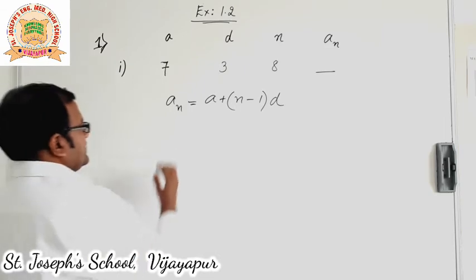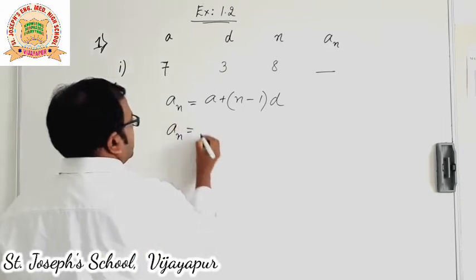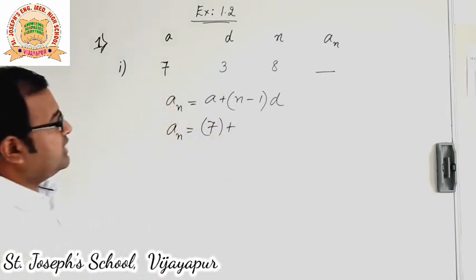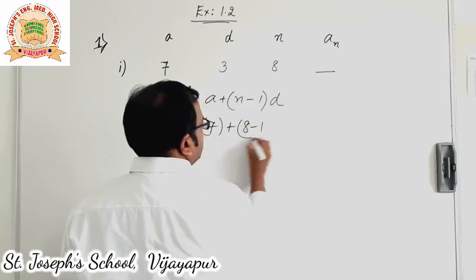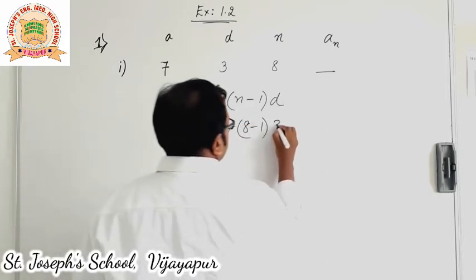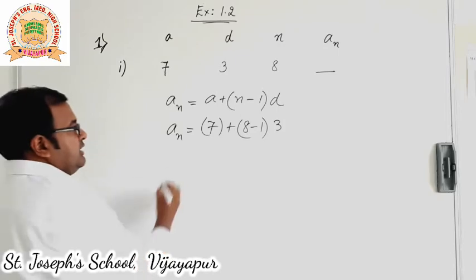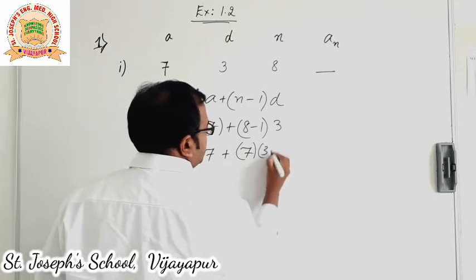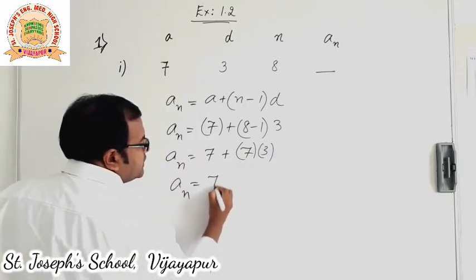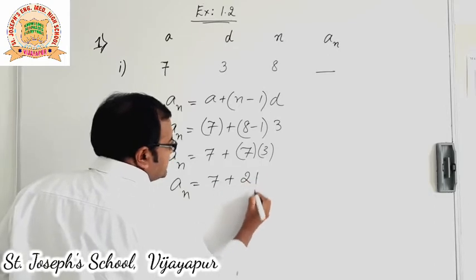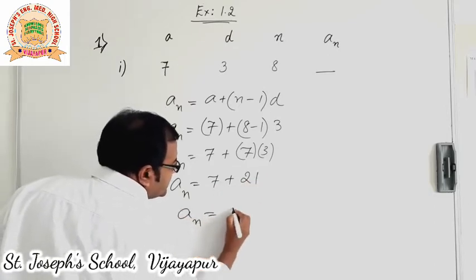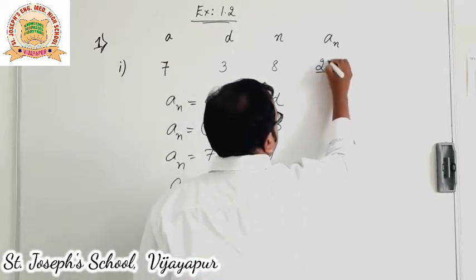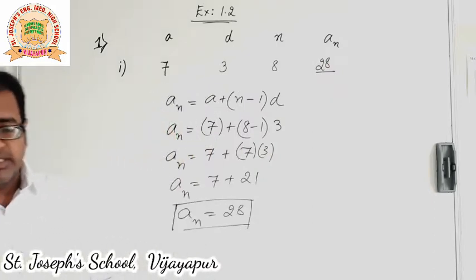An is equal to a which is 7, plus n minus 1 — n is 8 — minus 1 into d which is 3. Further simplification: an is equal to 7 plus 7 into 3, which gives an is equal to 7 plus 21. So finally an is equal to 28. We can now fill in the answer: an is equal to 28.